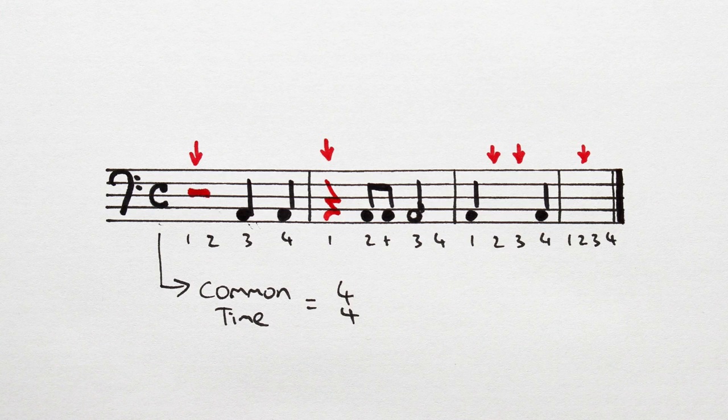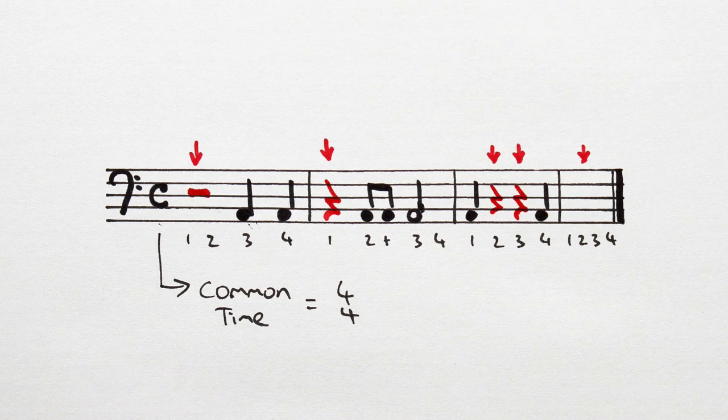On to bar 3, where beats 2 and 3 are missing. Now, be careful here. Remember, the minim rest cannot be used on beats 2 and 3. We have to write in two crotchet rests.